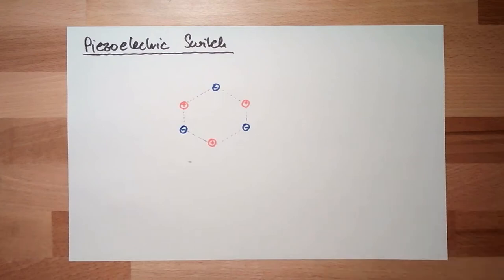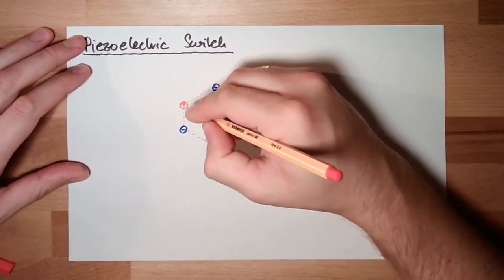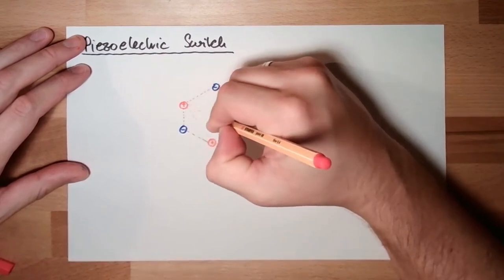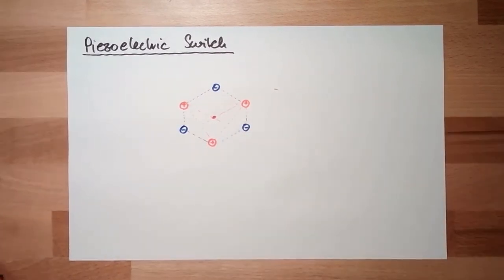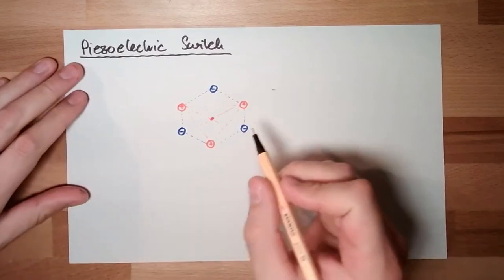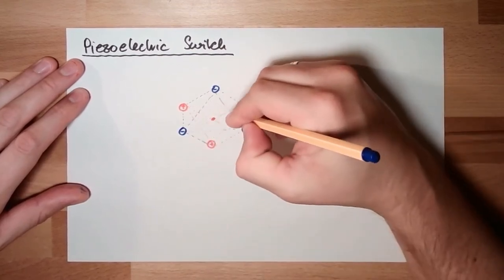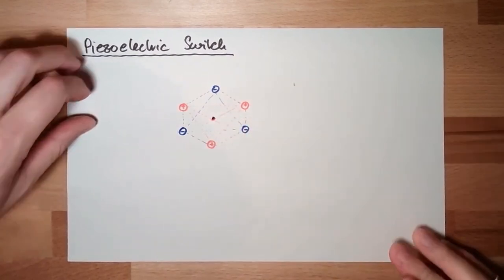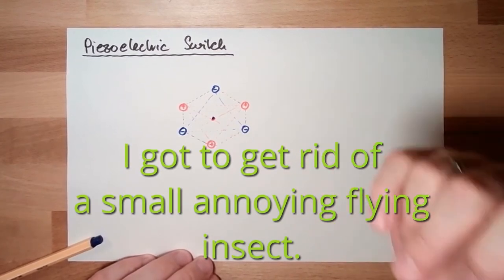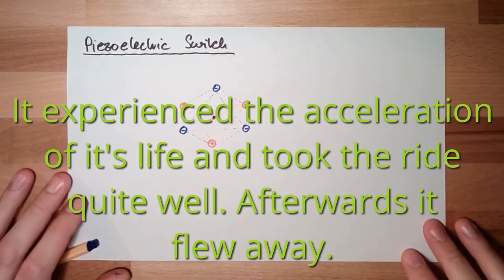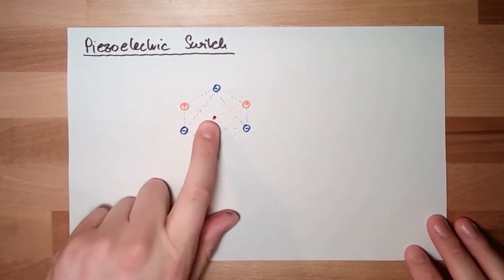Now let's have a look at the balance point of our plus charges. The balance point of our plus charges is here somewhere. Now let's have a look at the balance point, Schwerpunkt, of our negative charges. The balance point of our negative charges is also here. They are at the same position.